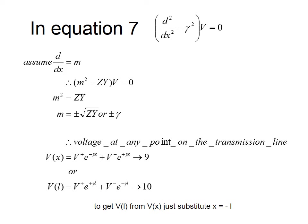Assuming d/dx = m, and knowing γ² = ZY, the solution is either V = 0 or m² − ZY = 0. Taking the non-trivial case, m² − ZY = 0 gives m = ±√(ZY) = ±γ.